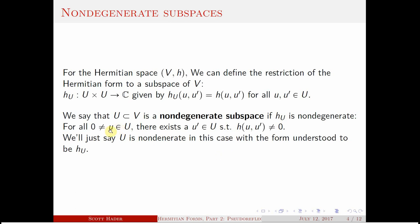For every non-zero element in U, it pairs with something else in U to be something non-zero — it can't take everything else in U to zero, otherwise it would be in the radical and you'd have a non-zero radical. The radical equals zero if and only if it's non-degenerate. We'll just say the subspace is non-degenerate instead of saying the form restricted to U is non-degenerate each time.